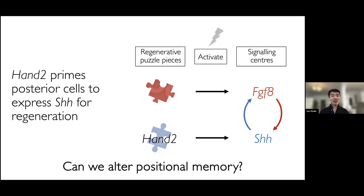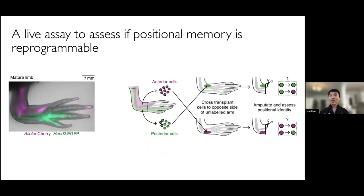To address this question, we had to come up with a new assay — one in which we could live-track the positional identity of anterior and posterior cells and see how they change in response to manipulations. We generated a new double transgenic knock-in axolotl in which anterior cells are labeled with mCherry fluorophore in magenta and posterior cells are labeled with EGFP fluorophore in green. From this animal, we purified either a pure population of anterior cells or a pure population of posterior cells by FACS, and then transplanted them by cell injection into the opposite side of an unlabeled host limb.